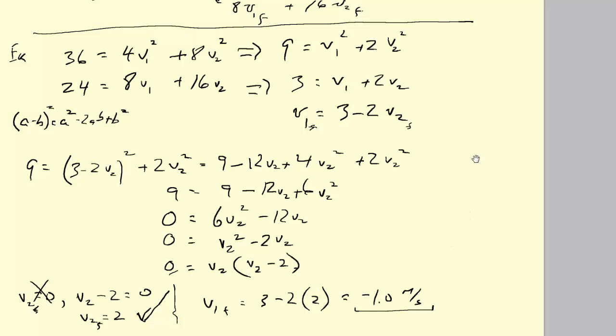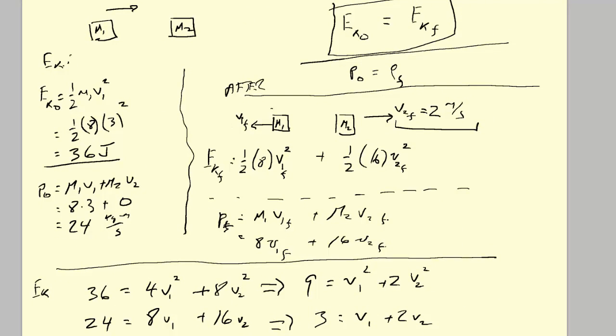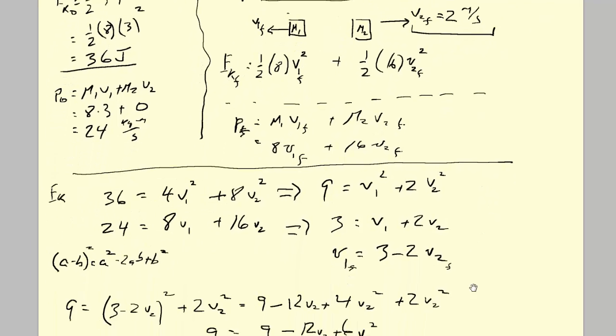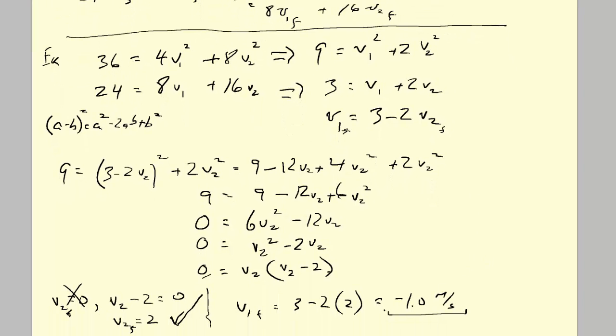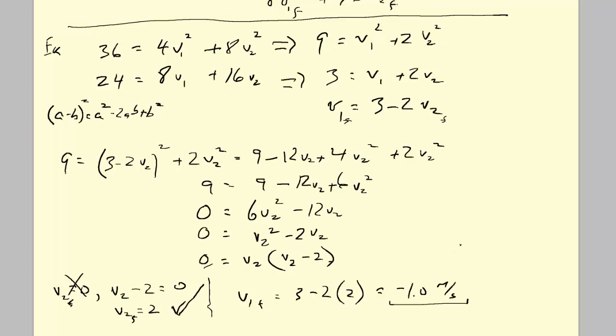That negative means that mass 1 moves to the left, which is, go look at the simulation, that's what it did. Our picture here is correct. Our values agree with the simulation. That's how you handle an elastic collision calculation. It wasn't as bad as it could have been because we got this happy mathematical cancellation of constants, which gave us something that was easy to factor.